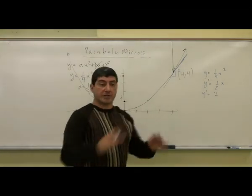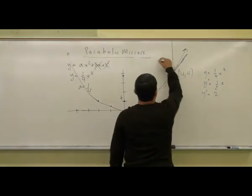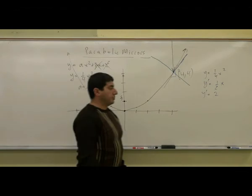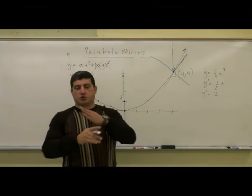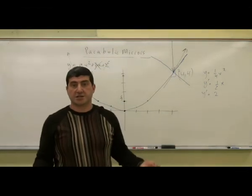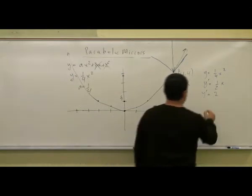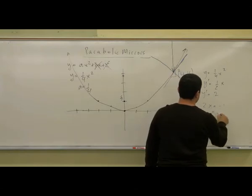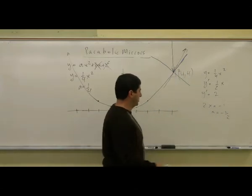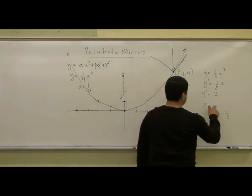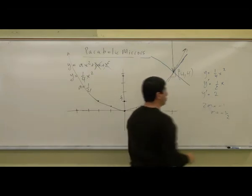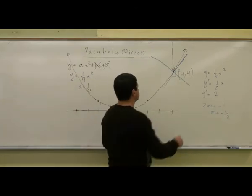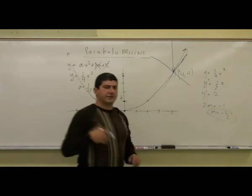What is the slope of the normal line at that point? The normal line is perpendicular to the tangent at the surface. In math we know that perpendicular lines have slopes whose product is −1, so 2 × m = −1, which means m = −1/2. The slope of the perpendicular (normal) line at that point is −1/2.